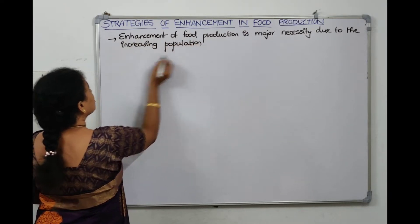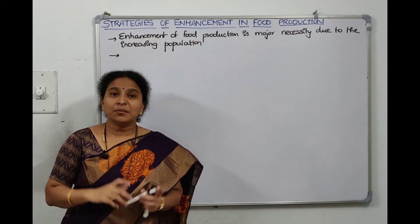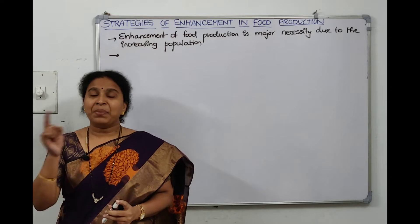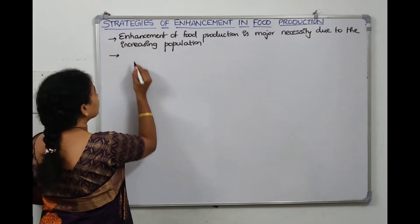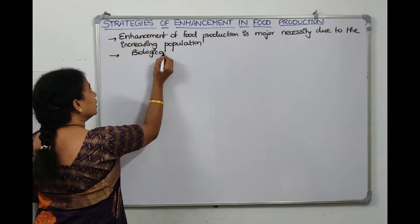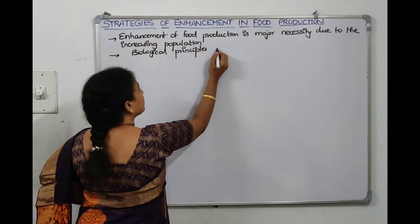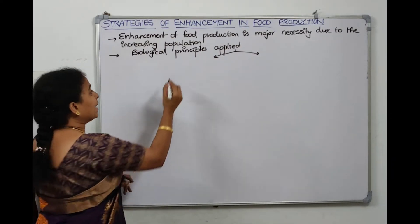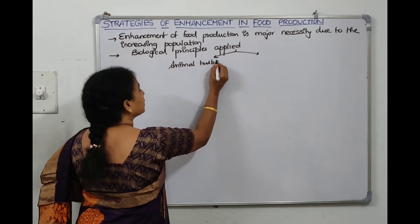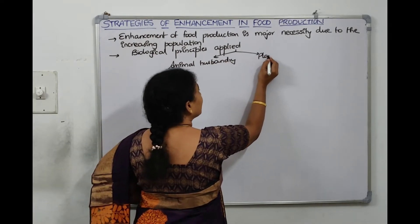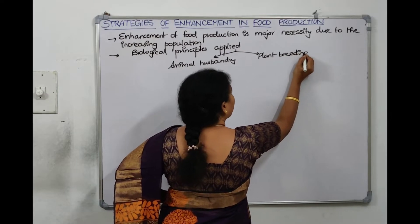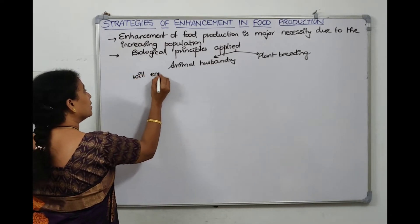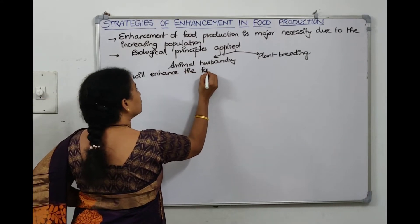Now, how will we enhance food production? By applying biological principles. If we apply biological principles in animal husbandry and plant breeding, it will enhance food production. When we apply our biological knowledge in animal husbandry and in plant breeding, the technology will enhance the food production.